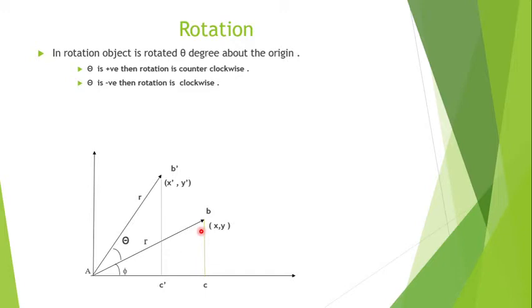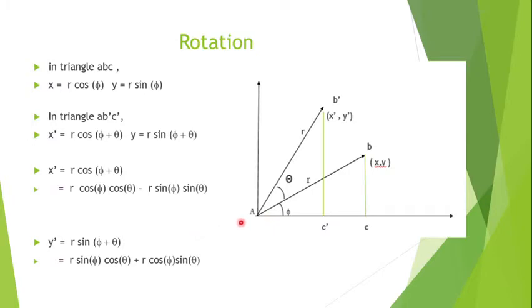In rotation, the object is rotated theta degrees about a point. If theta is positive, then rotation is counterclockwise. If theta is negative, then rotation is clockwise. We will now find the formula for rotation. From the figure, in triangle ABC: x = r cos(phi), y = r sin(phi). In triangle AB'C': x' = r cos(phi + theta), y' = r sin(phi + theta). These values of x, y, x', y' are obtained from trigonometric ratios.